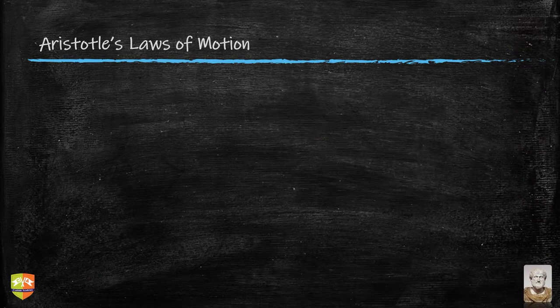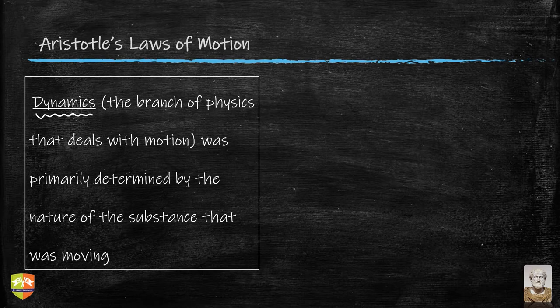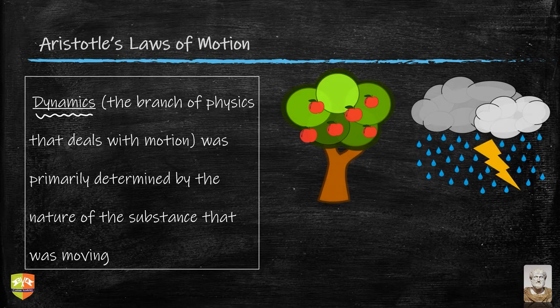Aristotle was also talking about dynamics — the branch of physics that deals with motion. You can now see the history of the word 'dynamics' coming from that time. Motion was primarily determined by the nature of the substance that was moving. Hence, if the substance is different, the laws followed by that particular substance will also be different.